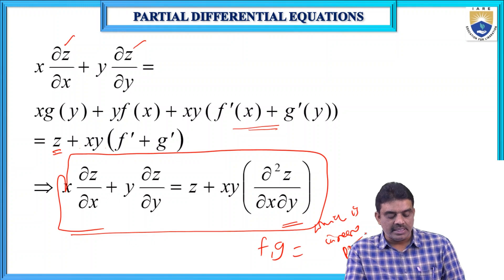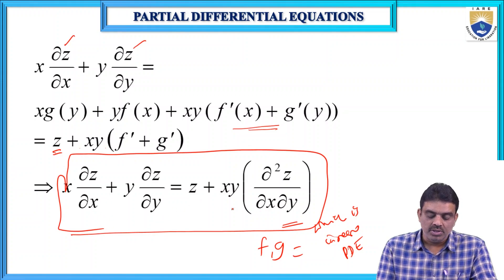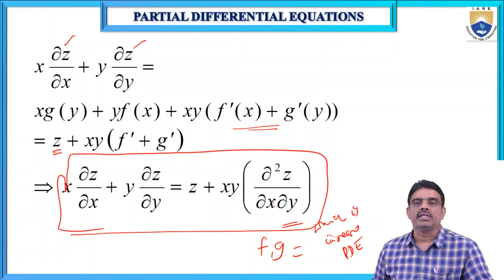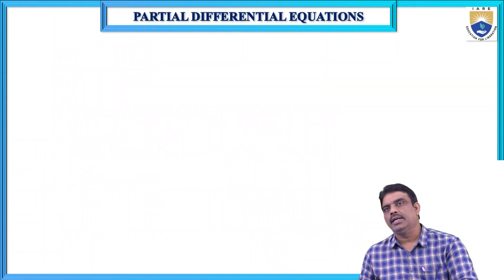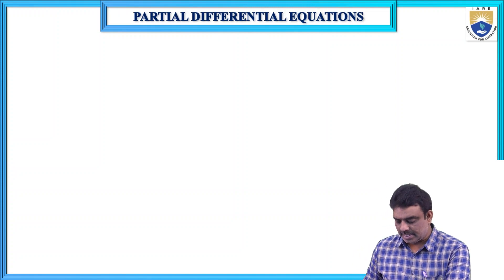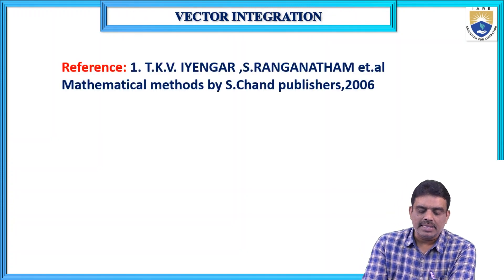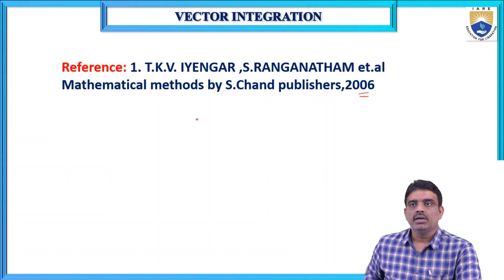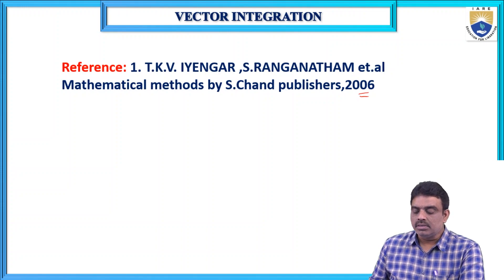So the required partial differential equation is x·∂z/∂x + y·∂z/∂y = z + xy·∂²z/∂x∂y, with both functions f and g eliminated. These problems are taken from the textbook Mathematical Methods by T.K.V. Iyengar, S. Ranganatham and other authors, published by S. Chand Publishers, 2006, from the partial differential equations chapter. Thank you.